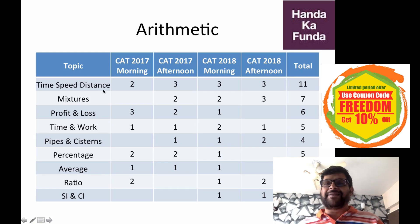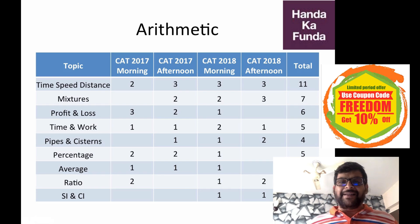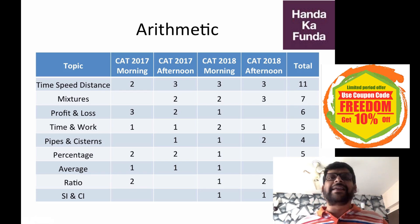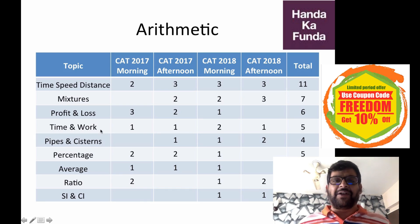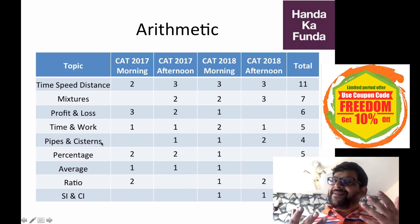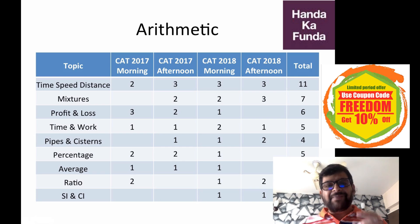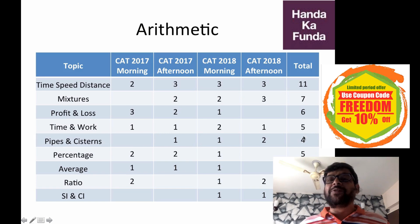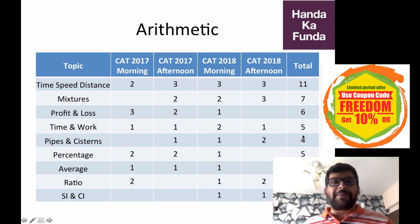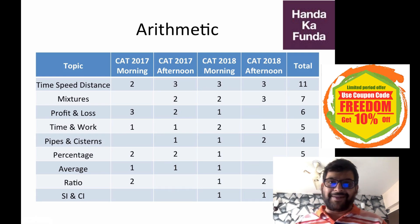Time, speed and distance is clearly the winner in arithmetic. If you have time, speed and distance and time and work on your side, things would really help. Note that time and work and pipes and systems are essentially the same type of question — pipes and systems questions are nothing else but time and work questions. If you think of these two as one, time and work actually gave you a total of nine questions. So these are the topics you need to prepare really well: time, speed, distance and time and work including pipes and systems.